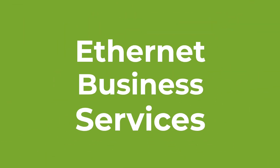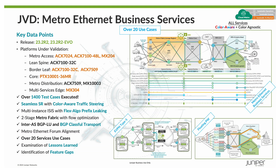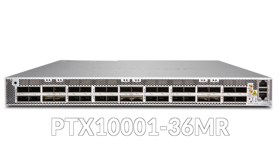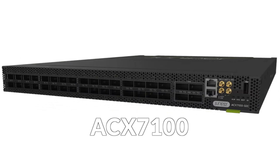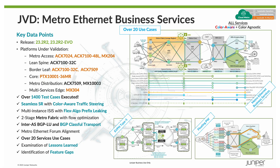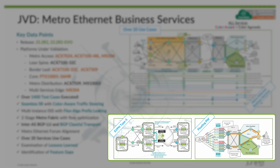Here's a snapshot of the key data points for the JVD I'll be covering today. Metro EBS is our most comprehensive JVD to date, truly tackling complex challenges encountered in live networks. Our topologies leverage the Juniper WAN portfolio with about 26 devices in total including MX-304, PTX-10136MR, ACX-7024, ACX-7100s, and ACX-7509. We executed over 1400 test cases in the process of validating the solution architecture, and we include over 20 different use cases for delivering Metro Ethernet services.